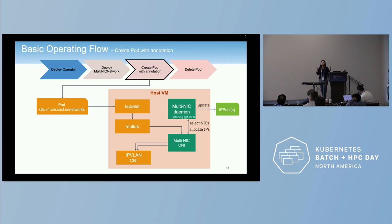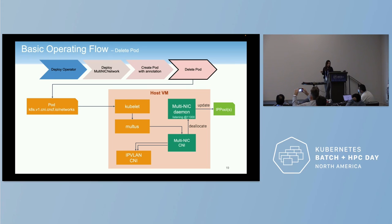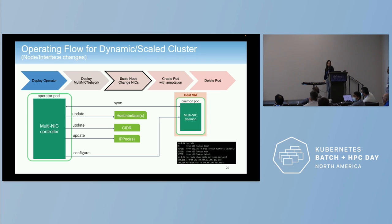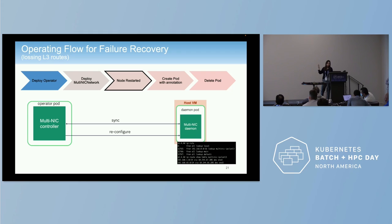If you define two additional interfaces, it will allocate two IP addresses. After deleting the pod, it goes back to Multus and the ManVinix CNI to update the IP pools and do synchronizations. If you change a node, it periodically synchronizes and detects that, then updates all custom resources for reconfiguration. If the node is destroyed, this can be detected by the route — it's not available on the host anymore — so it can do the reconfiguration and make the route available again.